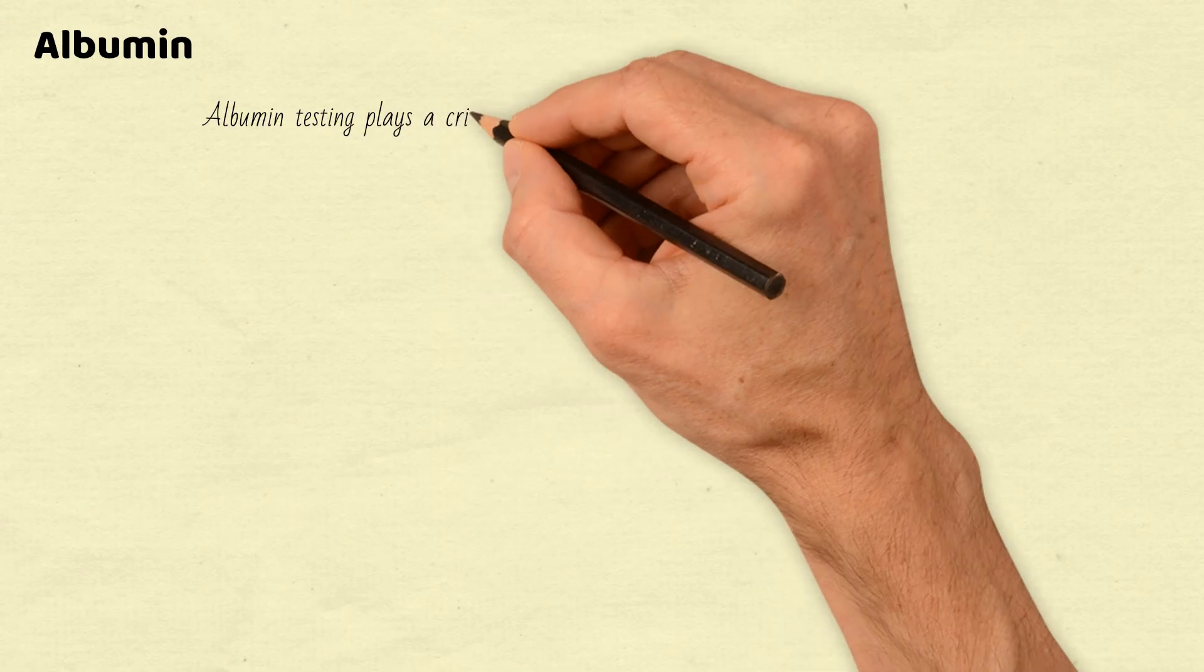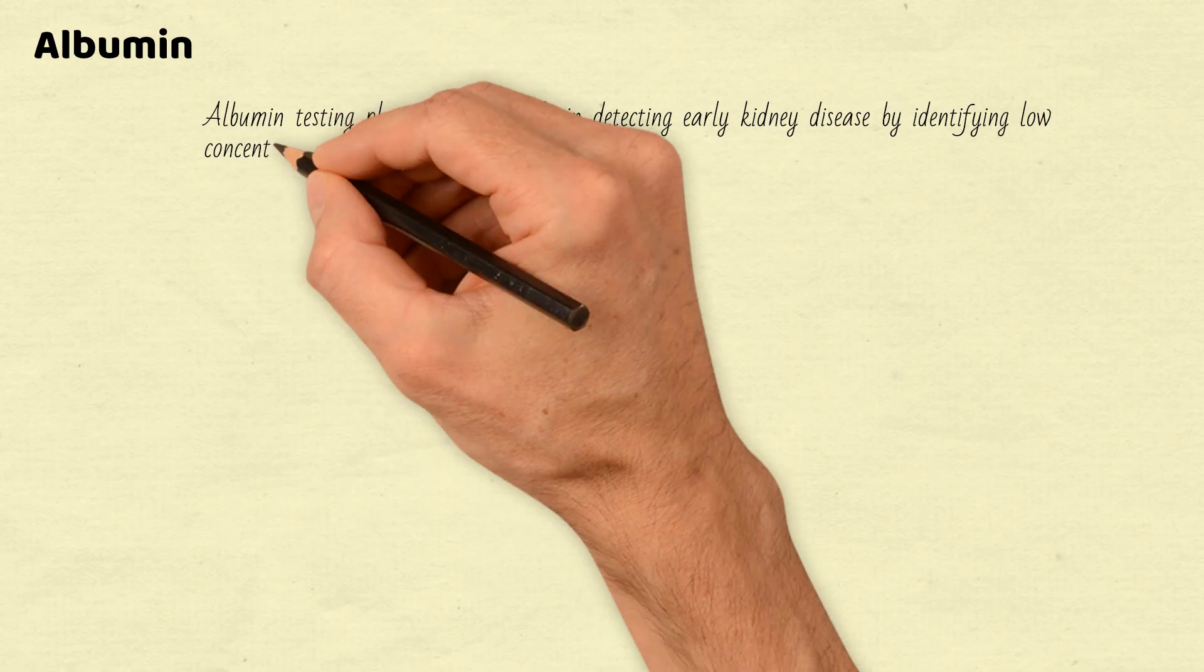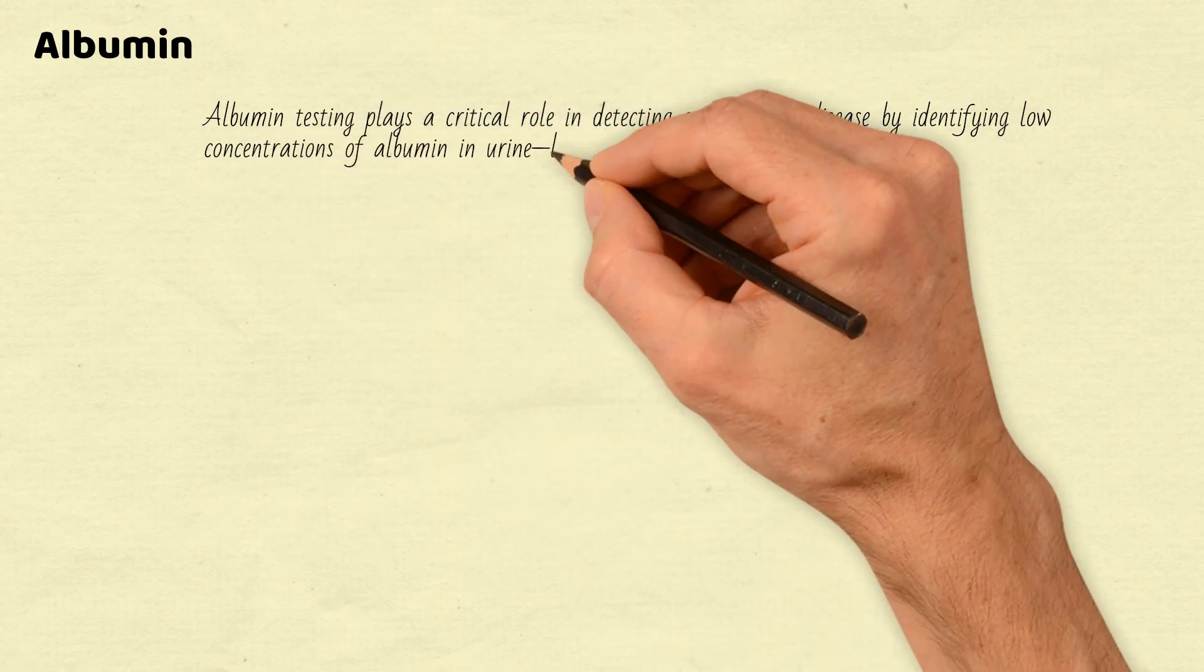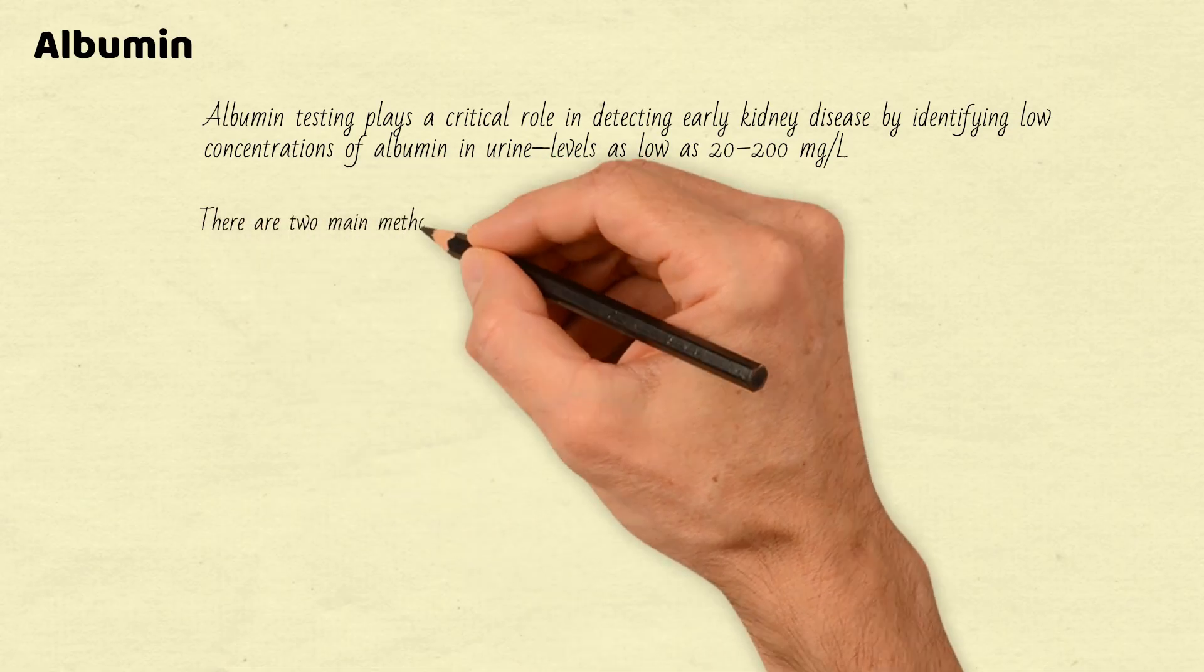Albumin testing plays a critical role in detecting early kidney disease by identifying low concentrations of albumin in urine, levels as low as 20 to 200 mg per liter.